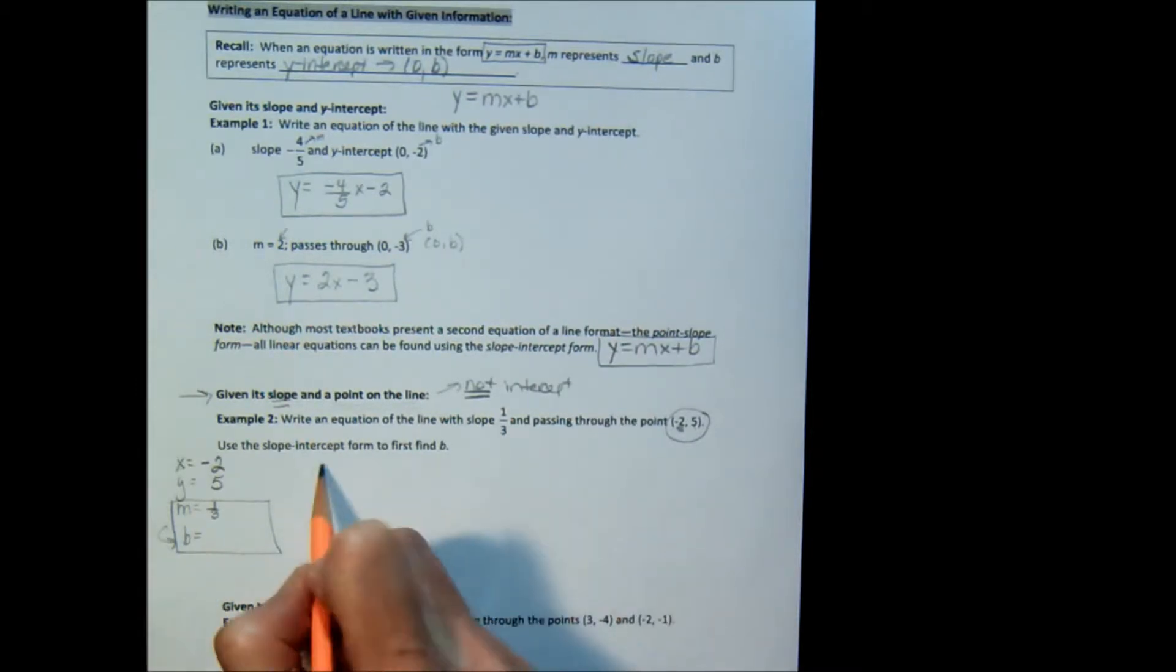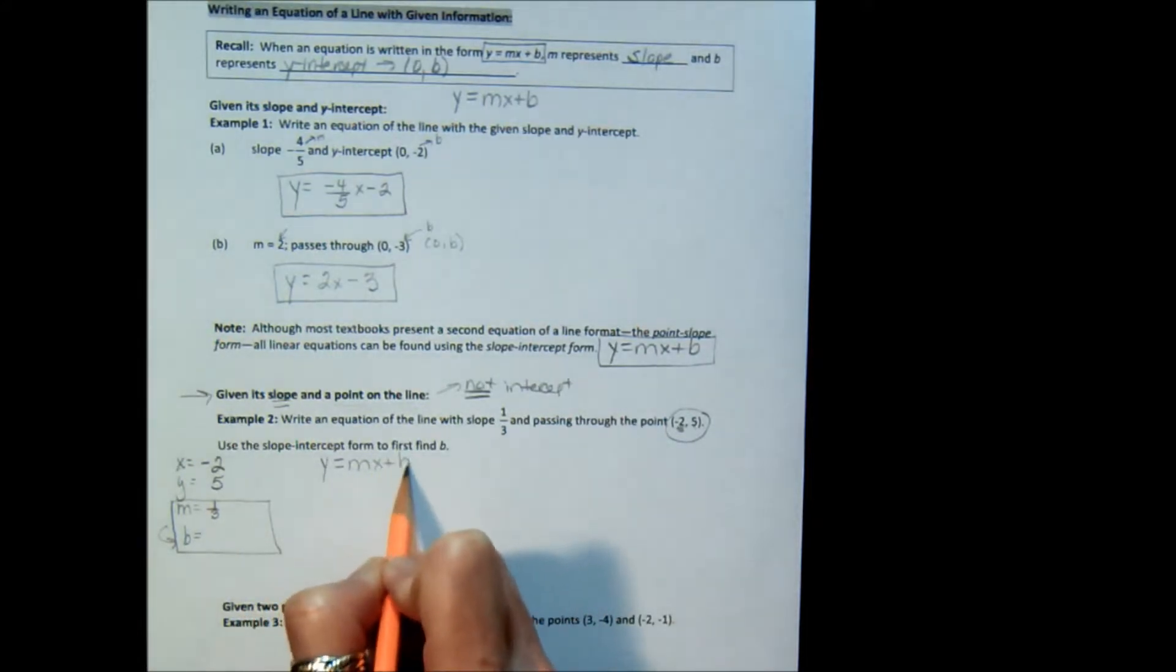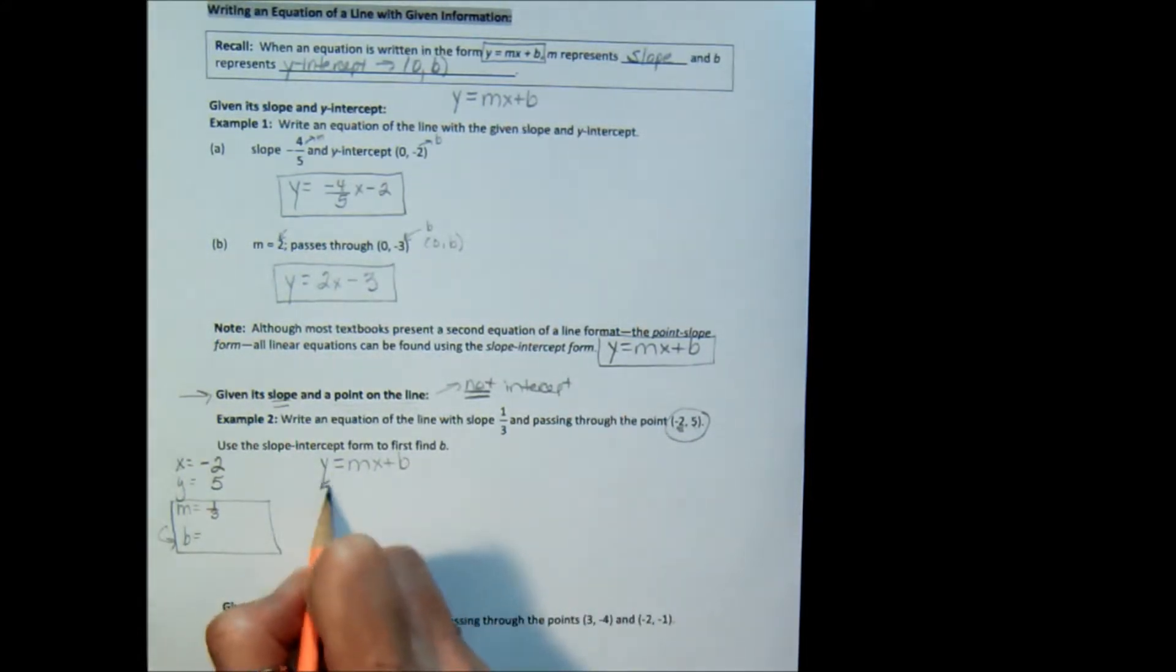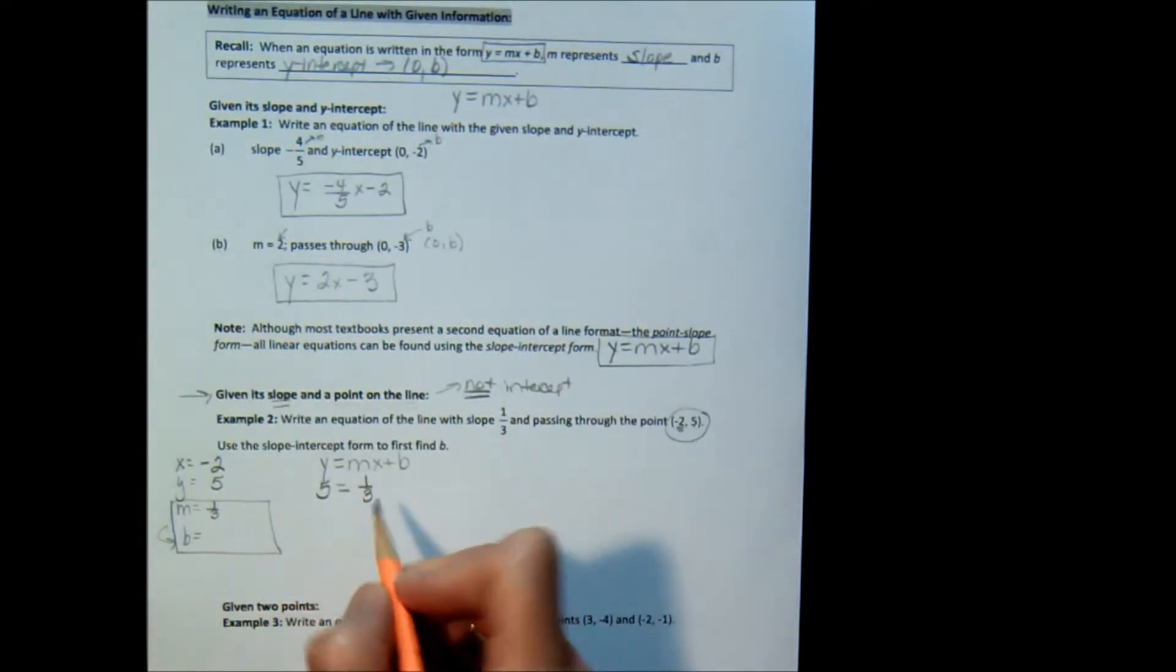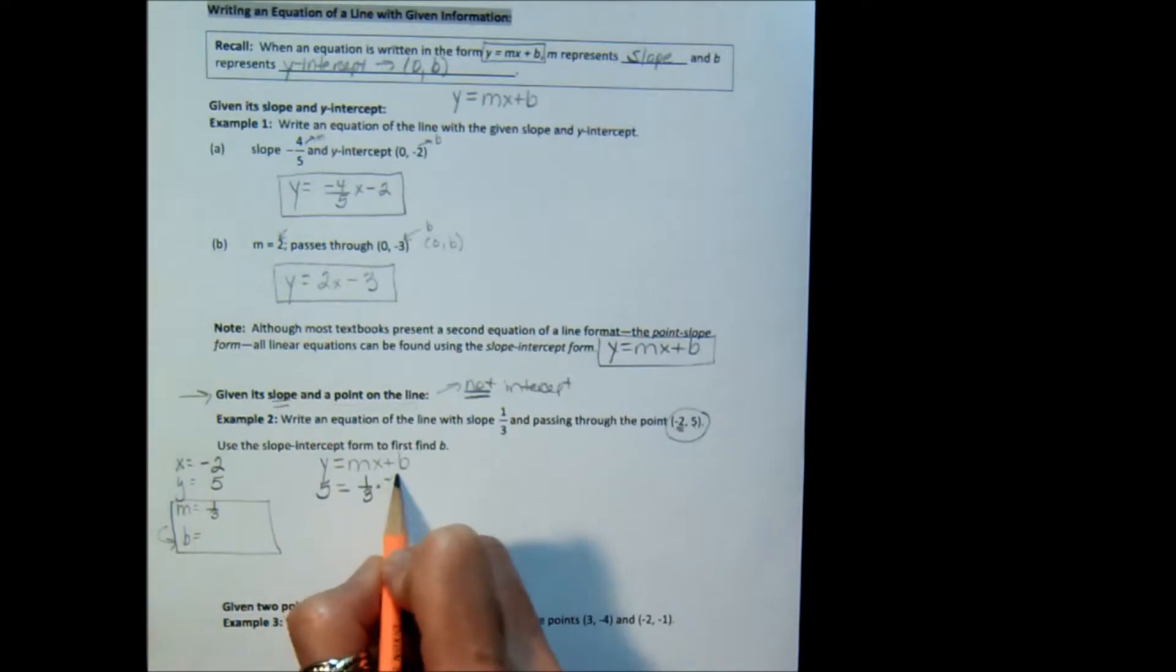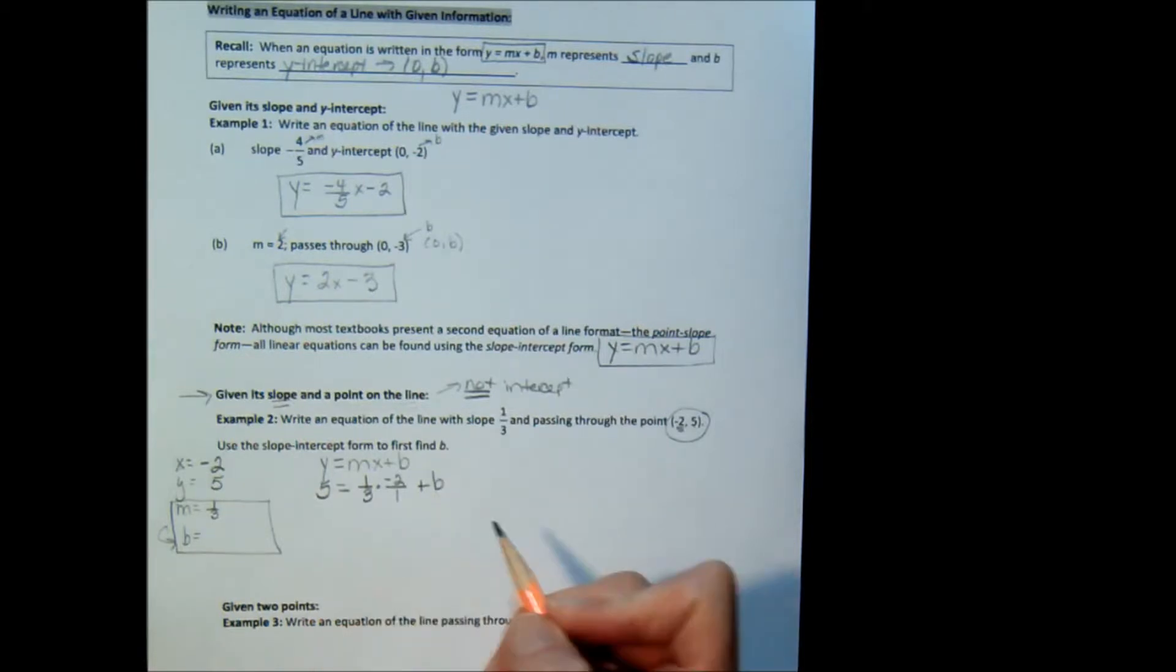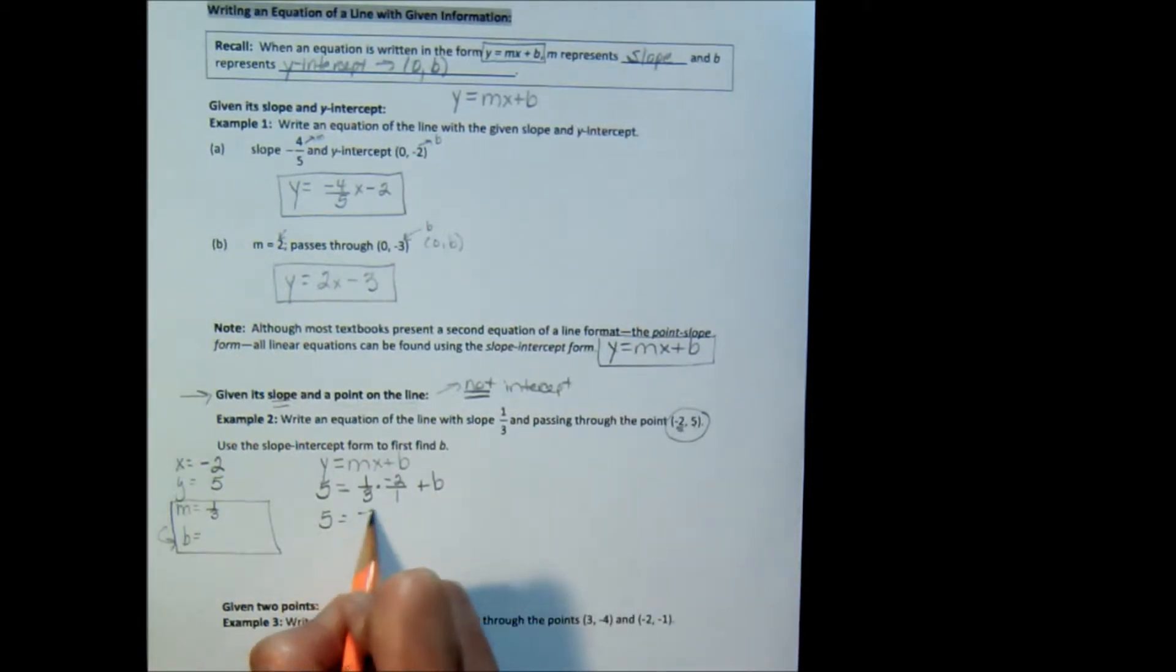So you're going to write y equals mx plus b. Now let's fill in the parts that we know. y, which is 5, equals m, which is 1 3rd, times x, which is negative 2. I'm going to put it over a 1 since I'm multiplying fractions. Plus the b that I don't know. Now, 5 equals negative 2 3rds plus b. To solve for b, I add a 2 3rds to both sides.